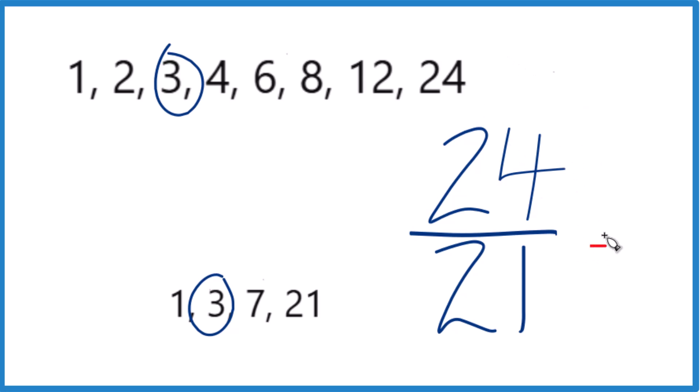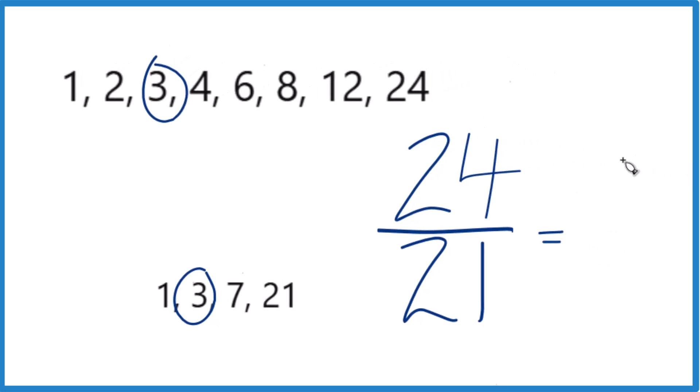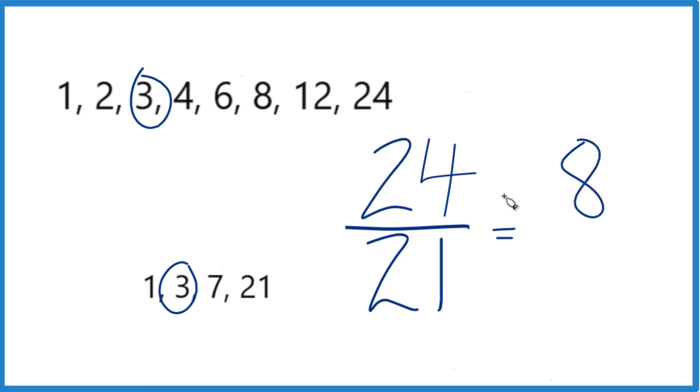So let's divide 24 by 3. That gives us 8. 8 times 3 is 24. And 21 divided by 3, that gives us 7. So we end up with 8/7. So when we simplify 24/21, we get 8/7.